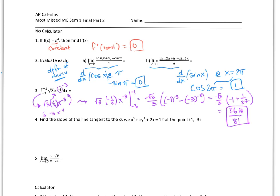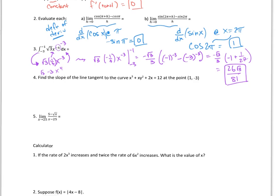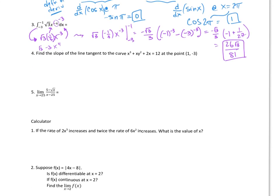For number 4, it says find the slope of the tangent line to the curve x cubed plus xy squared plus 2x equals 12 at the point (1, -3). I need a slope of a tangent line, so I need to take the derivative. Since this has both x's and y's, I need to differentiate implicitly. The first term becomes 3x squared. For the second term, using the product rule: first times the derivative of the second gives x times 2y times y prime.